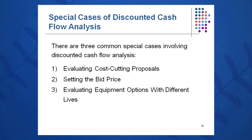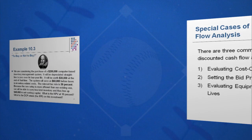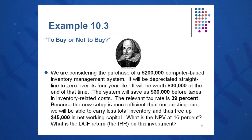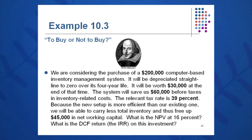For example, if I install a $200,000 piece of computer equipment for inventory management that will manage inventory more effectively, I still do the full analysis — income statement, balance sheet, and cash flow — even though sales will be zero. The equipment depreciates straight line to zero over a four-year life, is worth $30,000 at the end, saves $60,000 before taxes each year, with a 39% tax rate and $45,000 in net working capital required to start.